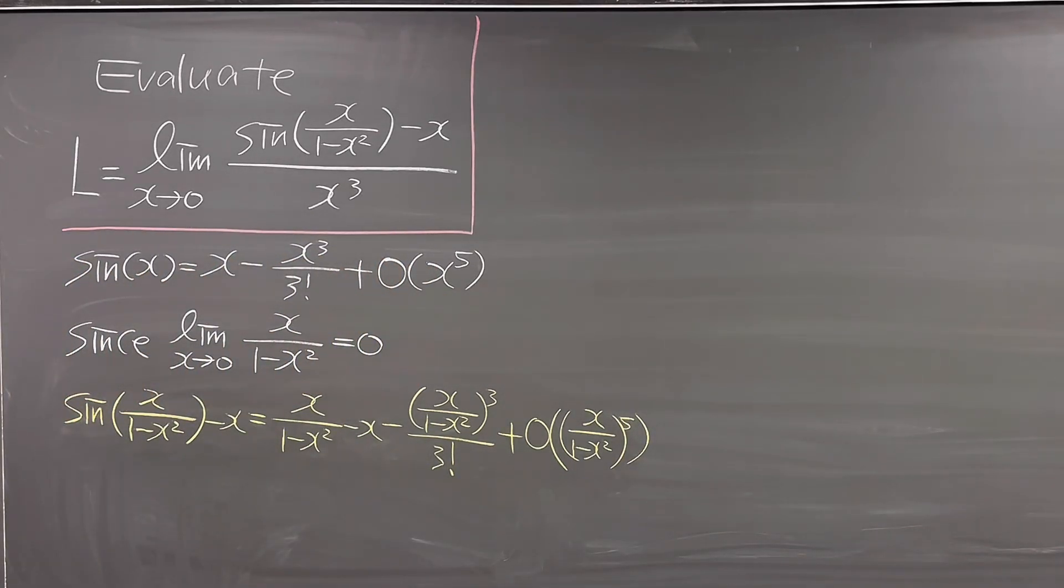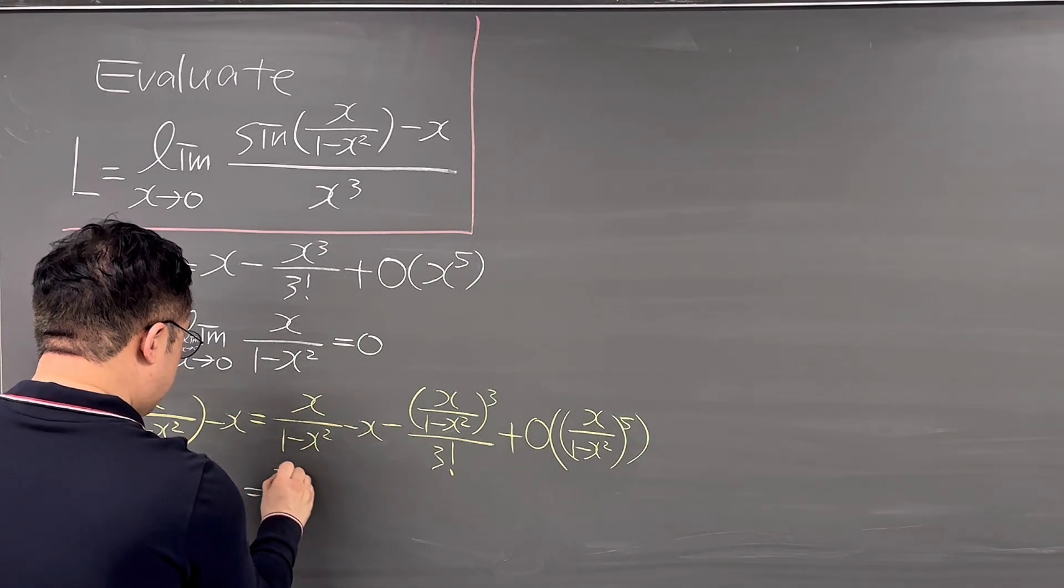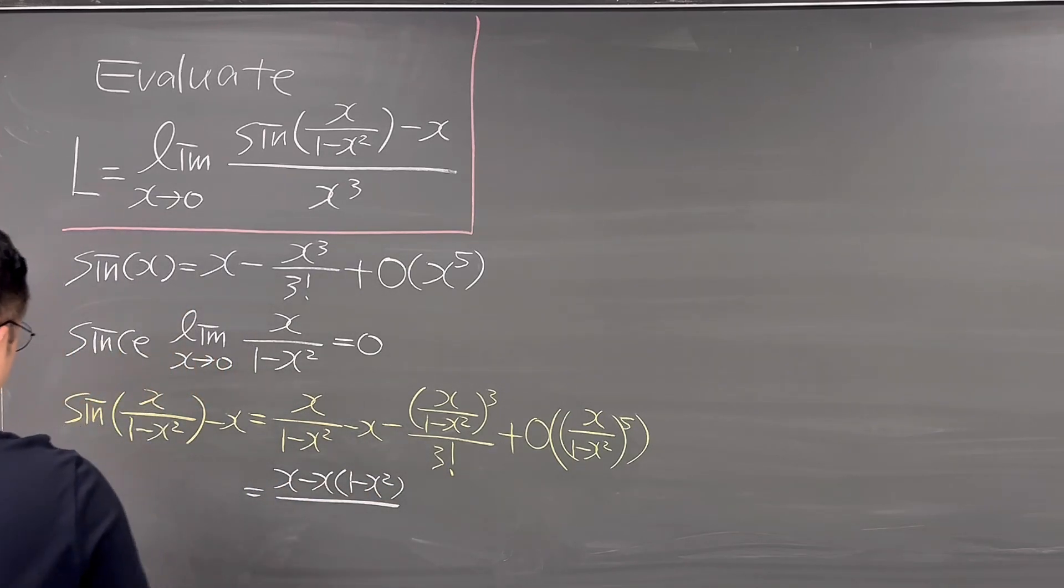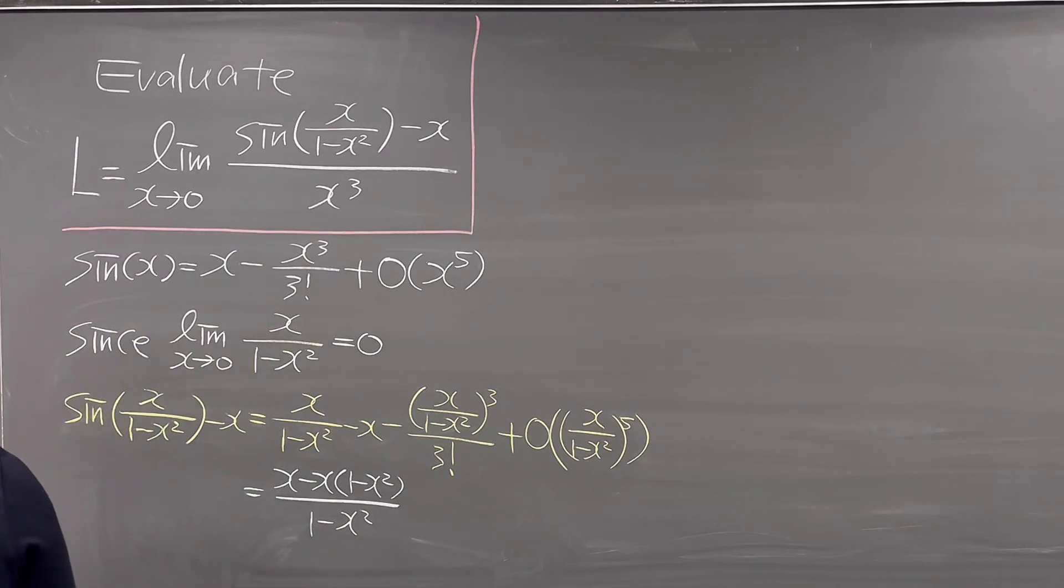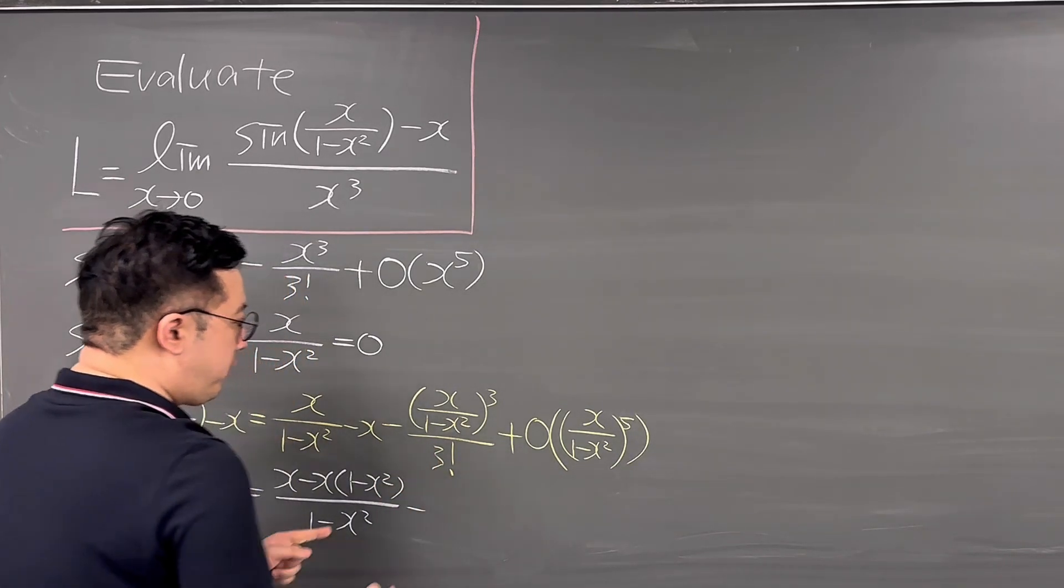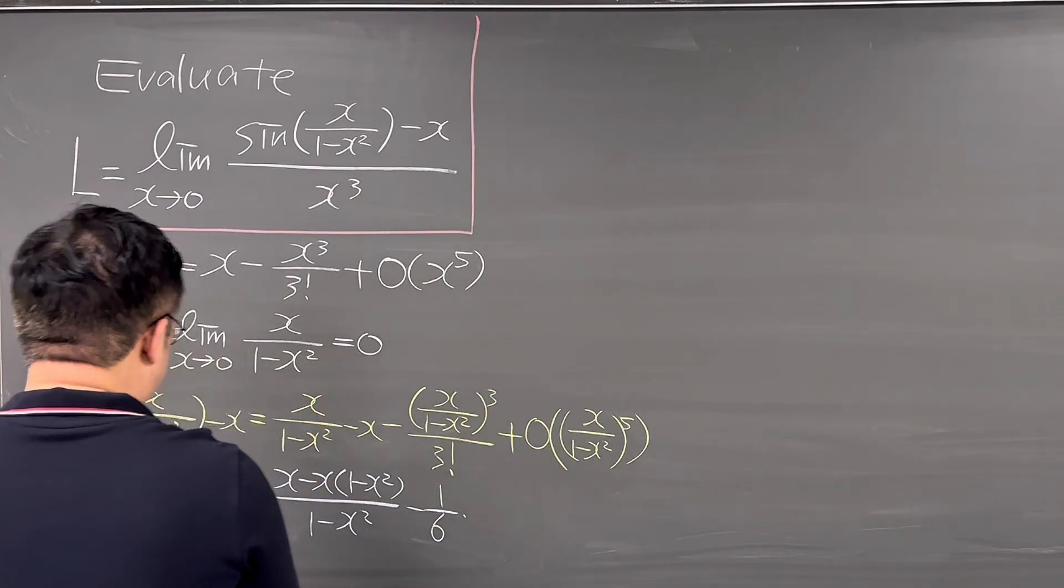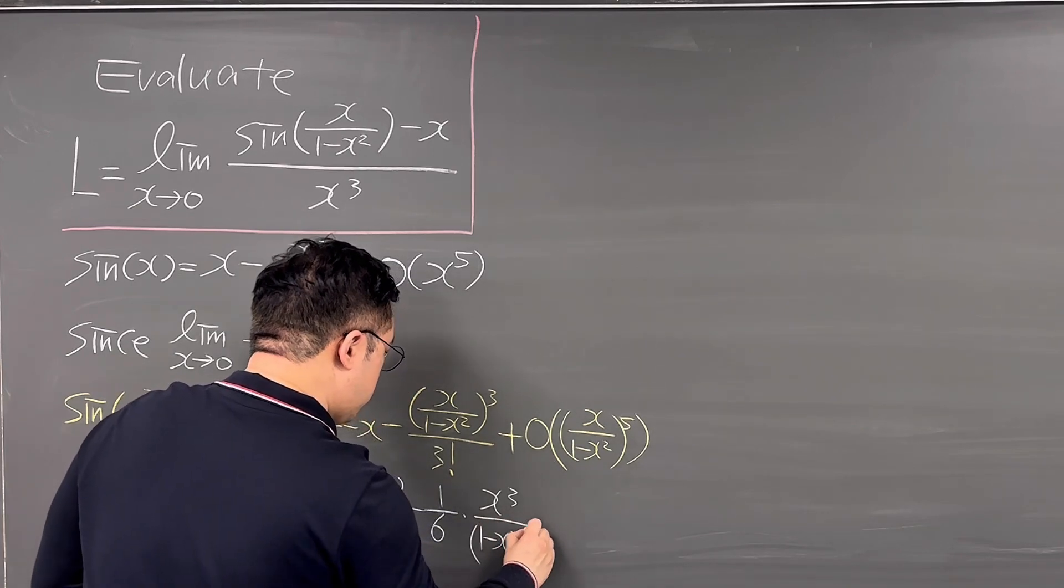Okay, so if you work this out, then it has to be the same as this term is now X minus X times X, 1 minus X squared, that over 1 minus X squared. And then minus 1 over 3 factorial is 1 over 6, right? So 1 over 6, X, then that times X cubed over 1 minus X squared cubed.